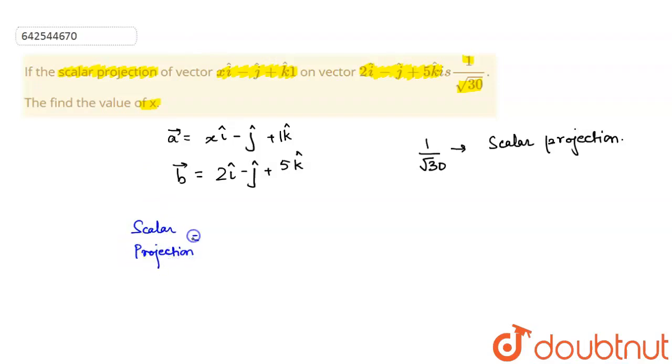It is the formula 1 upon magnitude of vector b into dot product of a and b. So just plug in the values.